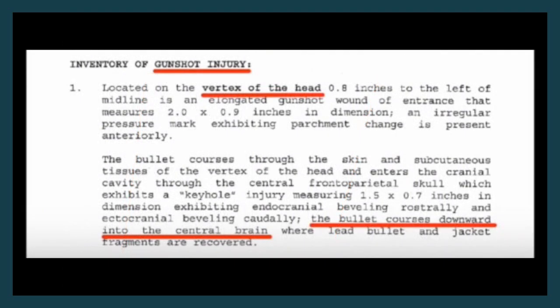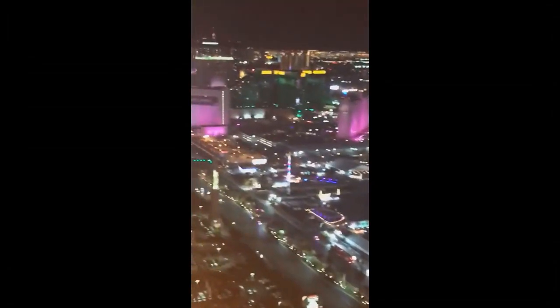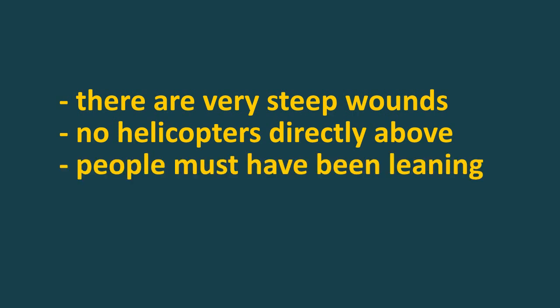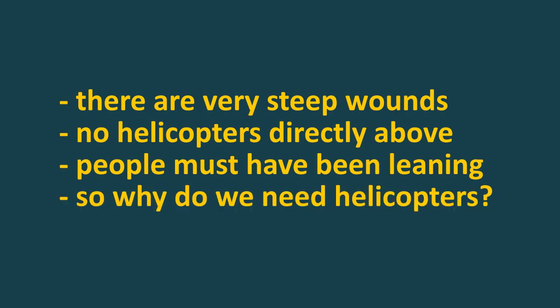If so, the helicopters would have to have hovered directly above the festival grounds. We know from videos shot outside the venue that this wasn't the case. Let's think this through: if there are very steep wounds but there were no helicopters directly above, then people must have been leaning to receive such wounds, even from helicopters. But if we admit that people were leaning, then why do we need helicopters to explain any steep wounds, instead of just people leaning? In terms of steep wounds, what do helicopters explain that leaning doesn't, besides being an unnecessary complication?